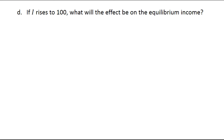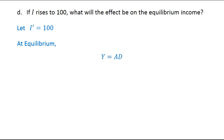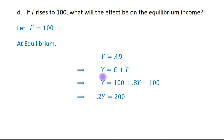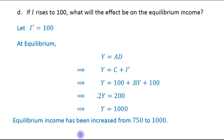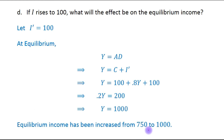Next part: if investment rises to 100, what will the effect be on equilibrium income? Let I' equals 100. At equilibrium, output equals aggregate demand, so Y equals C plus I'. The consumption function remains 100 plus 0.8Y, but now investment is 100. So Y minus 0.8Y gives 0.2Y, and 100 plus 100 gives 200, making Y equals 1000. Earlier it was 750. Thus equilibrium income has increased from 750 to 1000.